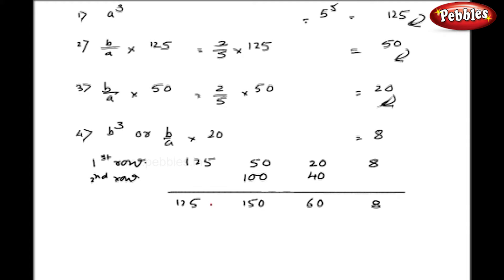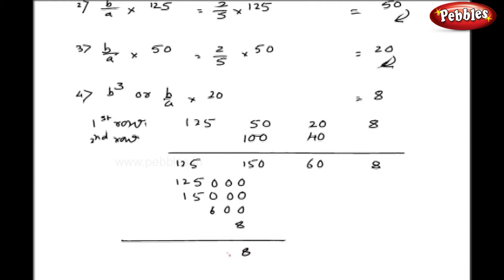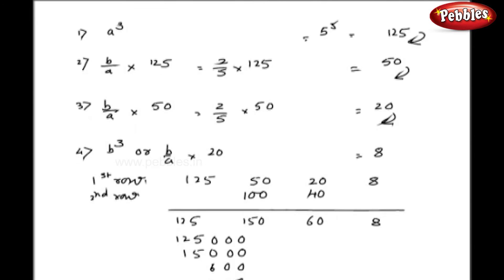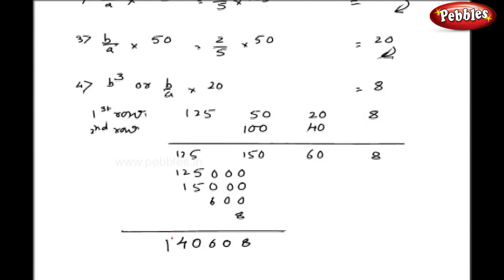Now my second part is over. In the third part, I will simply add three zeros in front of the first figure, two zeros for the second figure, one zero for the third figure, and no zero for the last figure. Then I add them traditionally: 8, 0, 6, 1, 0, 4, and 1. To revise: in the first part I did four calculations, then two rows, then I added zeros in front of the figures, and finally got the answer by addition.